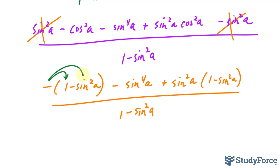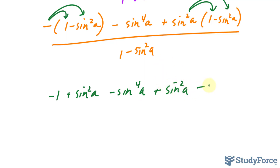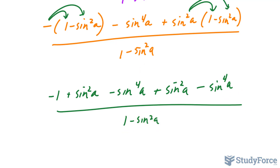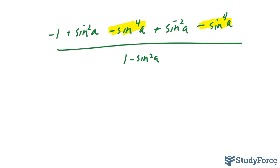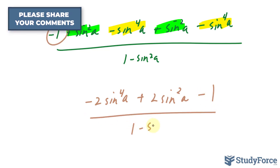Multiplying negative 1 into this expression and sine squared A into that expression, we get minus 1 plus sine squared A, negative sine to the power of 4A. Multiplying further gives plus sine squared A minus sine to the power of 4A. This is good because now we can combine like terms: the two negative sine to the power of 4A terms give negative 2 sine to the power of 4A, the two sine squared A terms give plus 2 sine squared A, and the minus 1 remains, with the denominator staying the same.